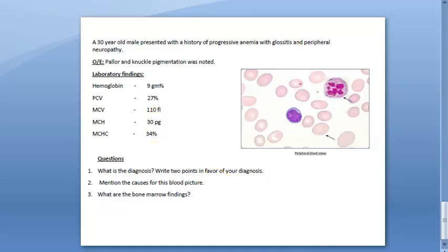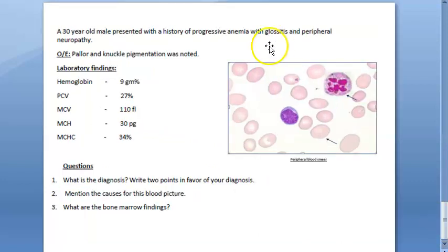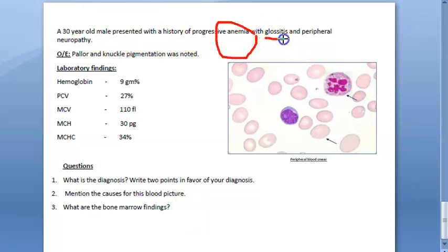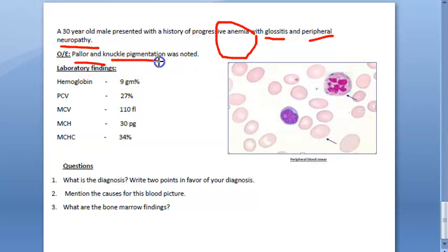In this video, let us look at this case study in pathology. A 30-year-old male presented with a history of progressive anemia, glossitis, and peripheral neuropathy. Pallor is there, knuckle pigmentation was noted. Hemoglobin is 9, which is less. PCV, which should be 45, is 27, which is also less.